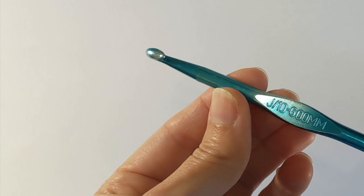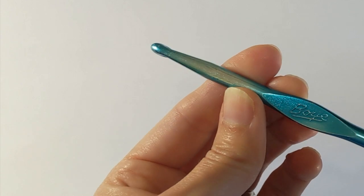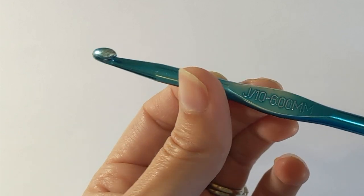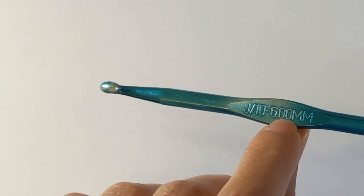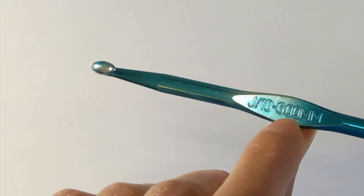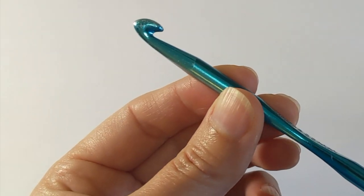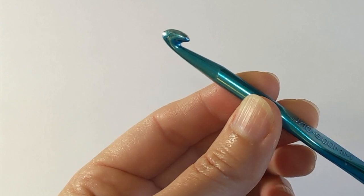I am going to take a minute now to look at a size J hook that is not exactly vintage but it's no longer the same style that's being produced. As I understand, the Boye company no longer makes 6 millimeter hooks as a size J. They have a different millimeter size for the J size.